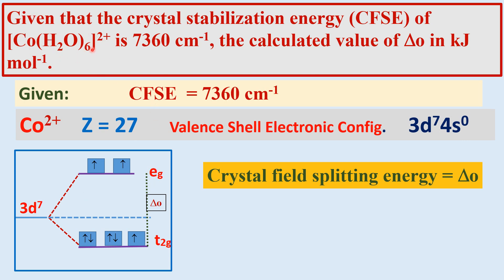In the presence of the ligand field or crystal field — here six water molecules — the d orbitals are split into two sets: T2g orbitals and Eg orbitals. When the crystal field approaches the central metal ion, different orbitals interact differently. The T2g orbitals — Dxy, Dyz, and Dxz — lie between the approaching ligands.